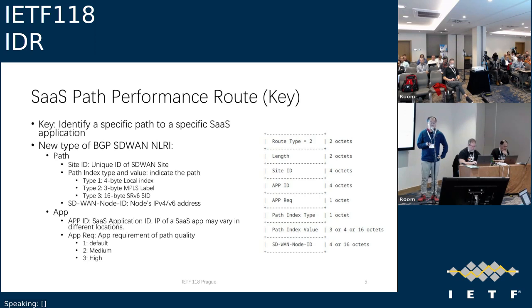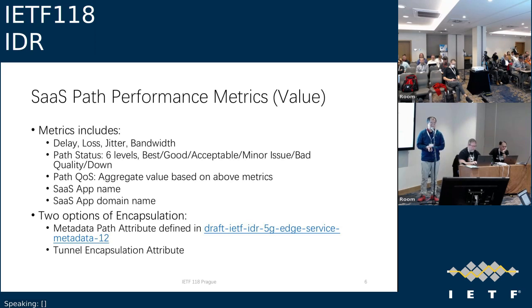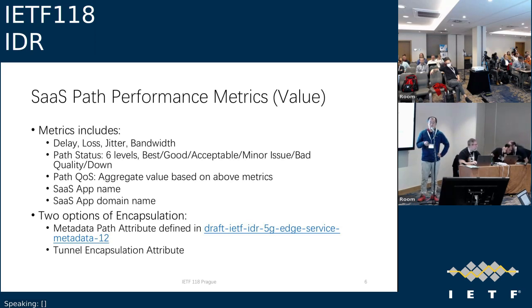For the path performance metric — the value part — the metric includes measurement results such as typical QoS parameters: delay, loss, jitter, and bandwidth. The path QoS will be aggregated based on these factors. We also include the SaaS application name or domain name. For this metric, we have two encapsulation options: the metadata path attribute defined in the edge service metadata draft, or the tunnel encapsulation attribute. We prefer the metadata path attribute because it's related to the path to the cloud side, not the SD-WAN tunnel performance.